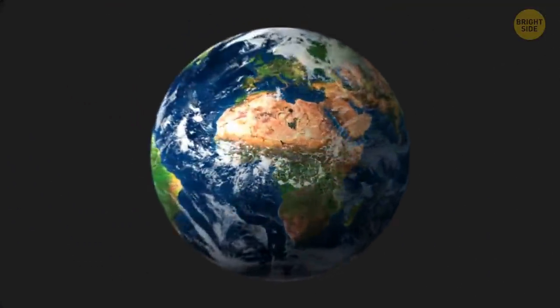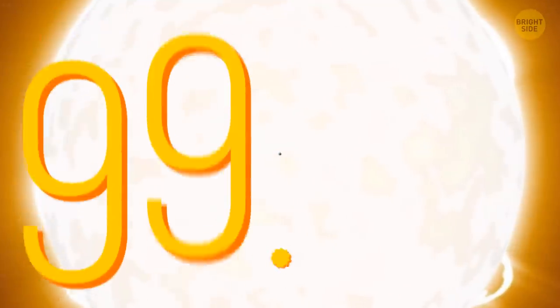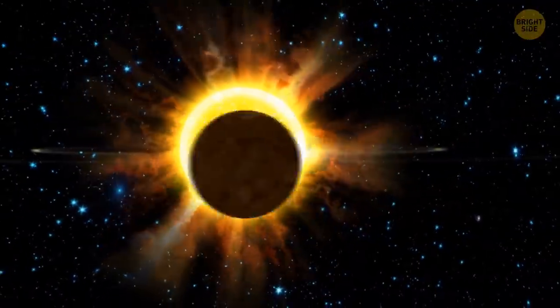You may think the Earth is pretty big, but the Sun makes up almost 99.9% of the mass of the whole solar system.